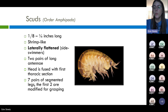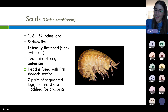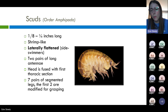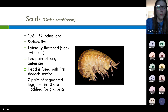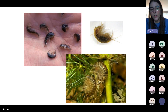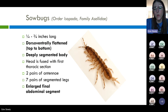Now we are moving on to our crustaceans, starting with scuds — also called side swimmers because we often find them swimming on their sides. They are laterally flattened from side to side. They have two pairs of antennae at the top, and seven pairs of segmented legs — the first two pairs are modified for grasping and tend to be much larger. You'll see all images of scuds are on their sides, which is common. They can look a little shrimpy, and they tend to be rounded like a C-shape.